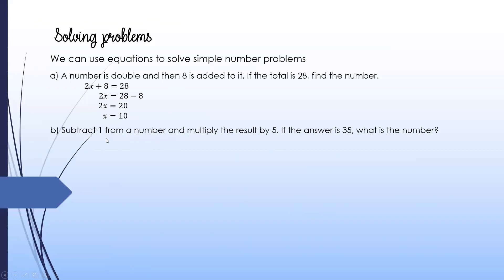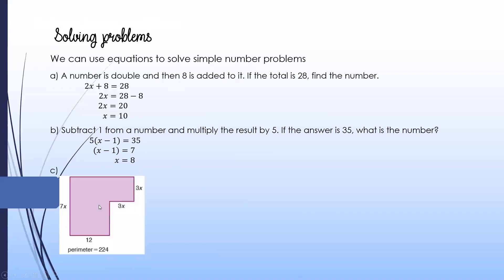Another word problem: subtract 1 from a number and multiply the result by 5; if the answer is 35, what is the number? Let x be the unknown, so the equation is 5 times (x minus 1) equals 35. Divide both sides by 5 to get x minus 1 equals 7, so x equals 8. This is how we form and solve the equation using algebra instead of guessing.